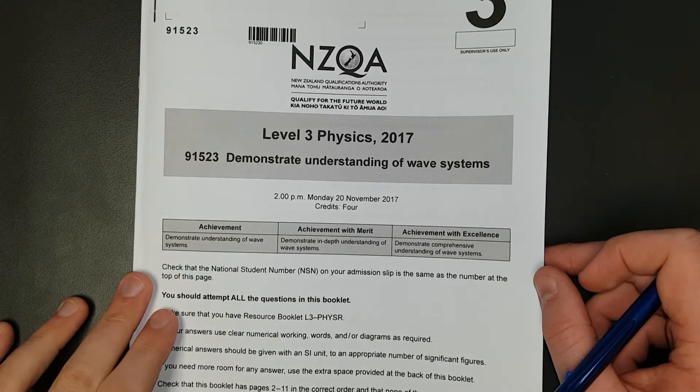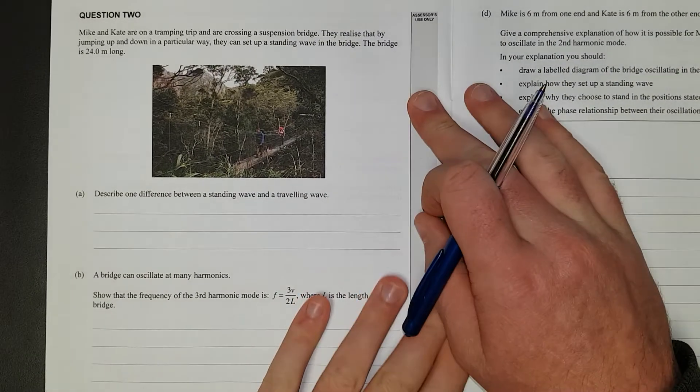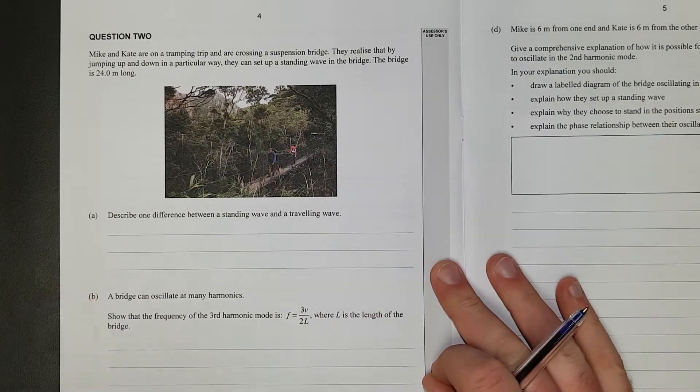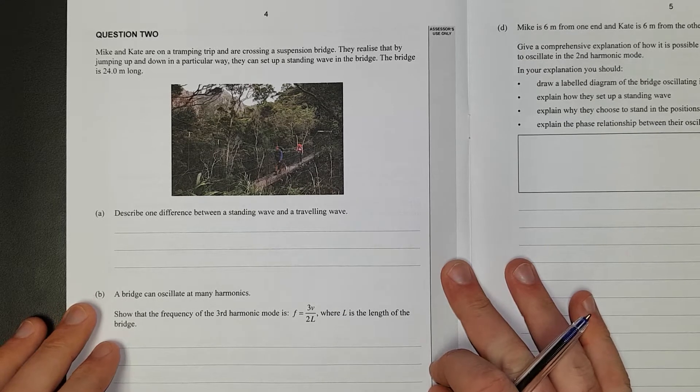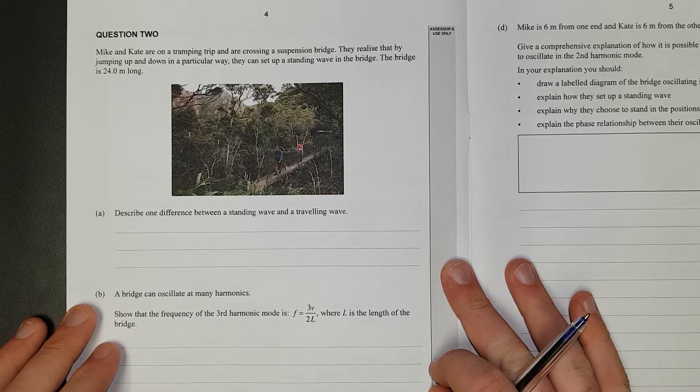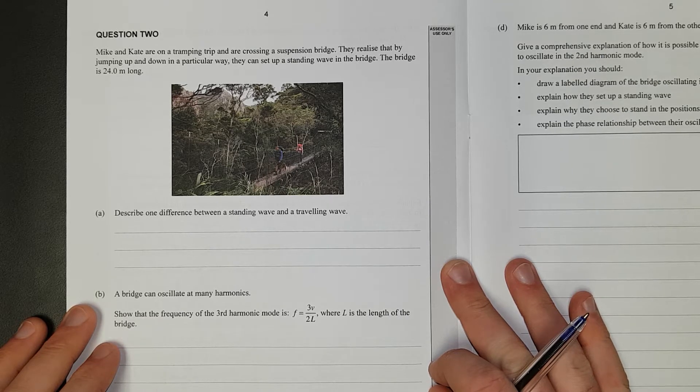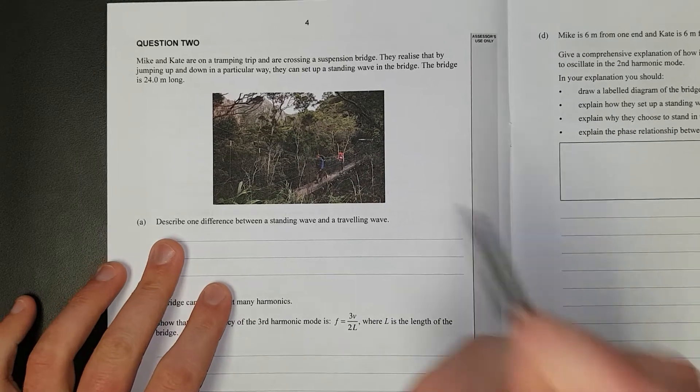For this video I'll be working through question 2 of the Level 3 2017 Waves exam. Question 2: Mike and Kate are on a tramping trip crossing a suspension bridge. They realize that by jumping up and down in a particular way they can set up a standing wave in the bridge. The bridge is 24 meters long. So we'll just highlight that.